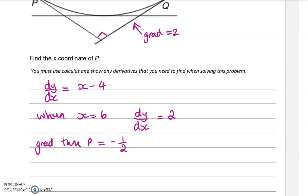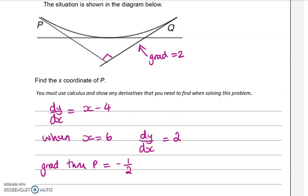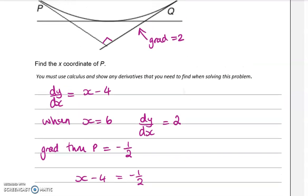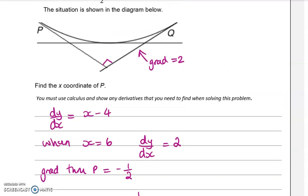So if we apply the two things we know about the gradient that goes through P, we know that it follows this function of X minus 4 and we know that it's equal to minus 1 half. So the gradient function will be equal to minus 1 half. We want to know when does that happen. Well, that happens when X is 3.5. So 3.5 is your X coordinate of P.